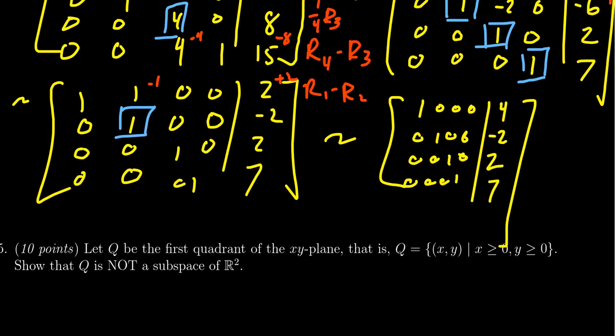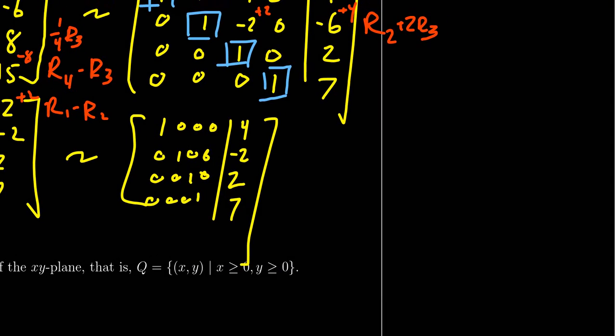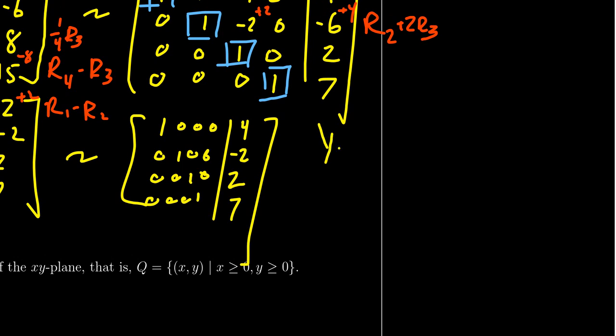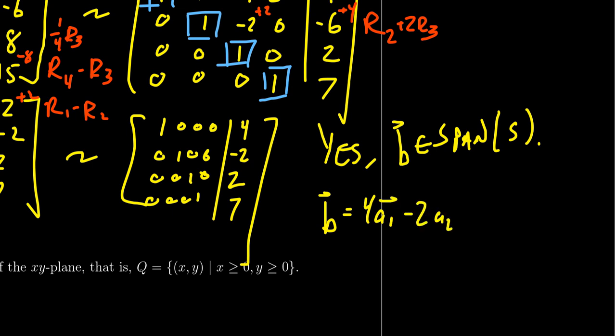So we'd say something like the following. Yes, b does belong to the span of S. And so in fact, we see that b is equal to 4 times a1 minus 2 times a2 plus 2 times a3 plus 7 times a4.